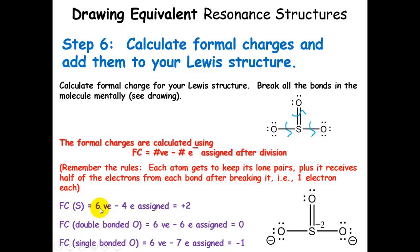For sulfur, we get six valence electrons minus four electrons assigned, giving a formal charge of plus two. The formal charge for the double bonded oxygen is zero, six minus six. The two oxygens with three lone pairs are assigned seven electrons, so they end up with a negative one formal charge.